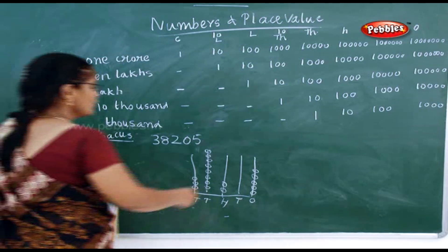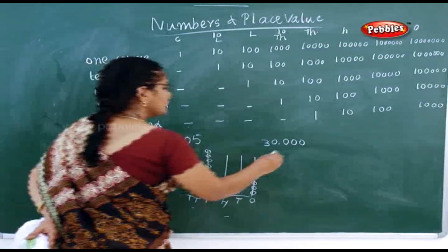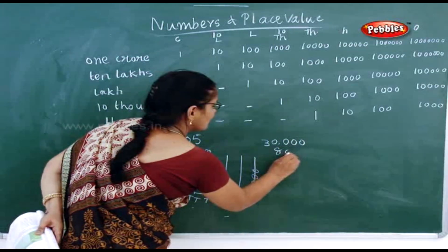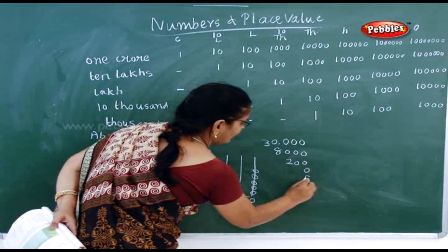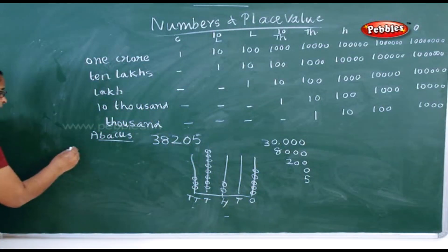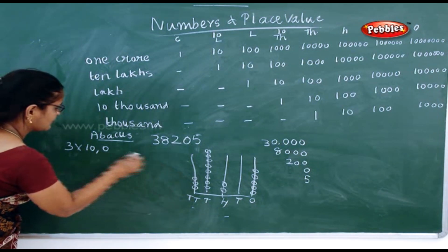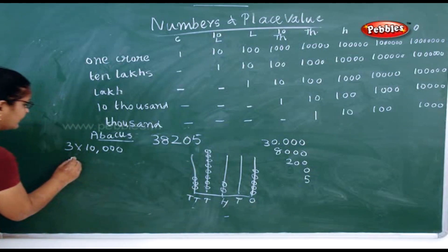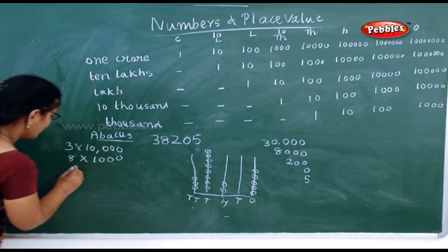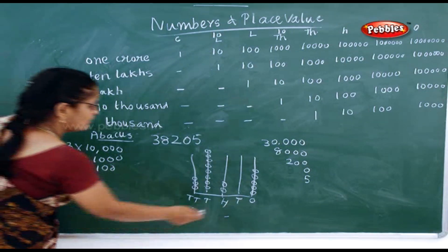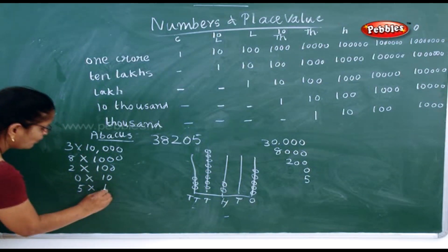Then 3 rings in ten-thousands. You expand it as: 30,000 + 8,000 + 200 + 0 + 5. In abacus form: 3 × 10,000 + 8 × 1,000 + 2 × 100 + 0 × 10 + 5 × 1. This is what you call abacus form.